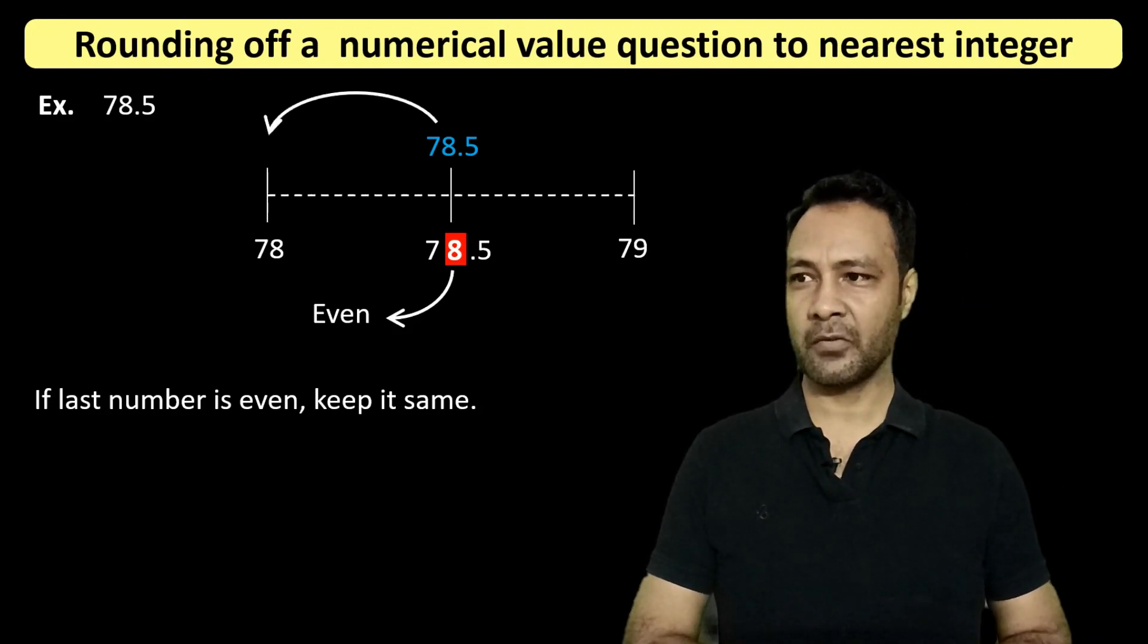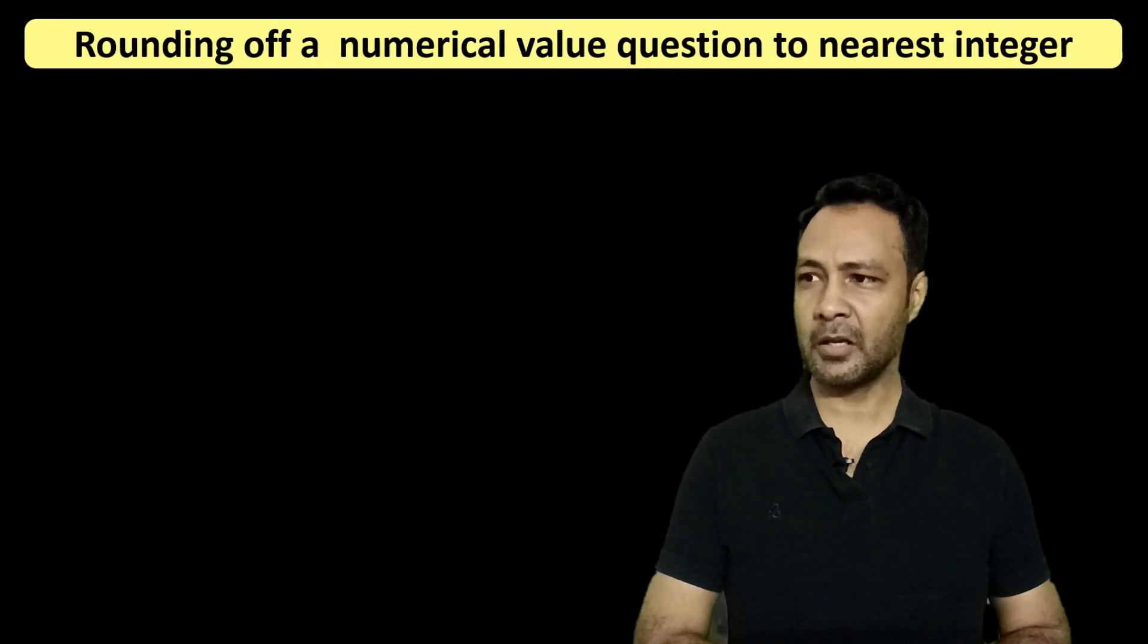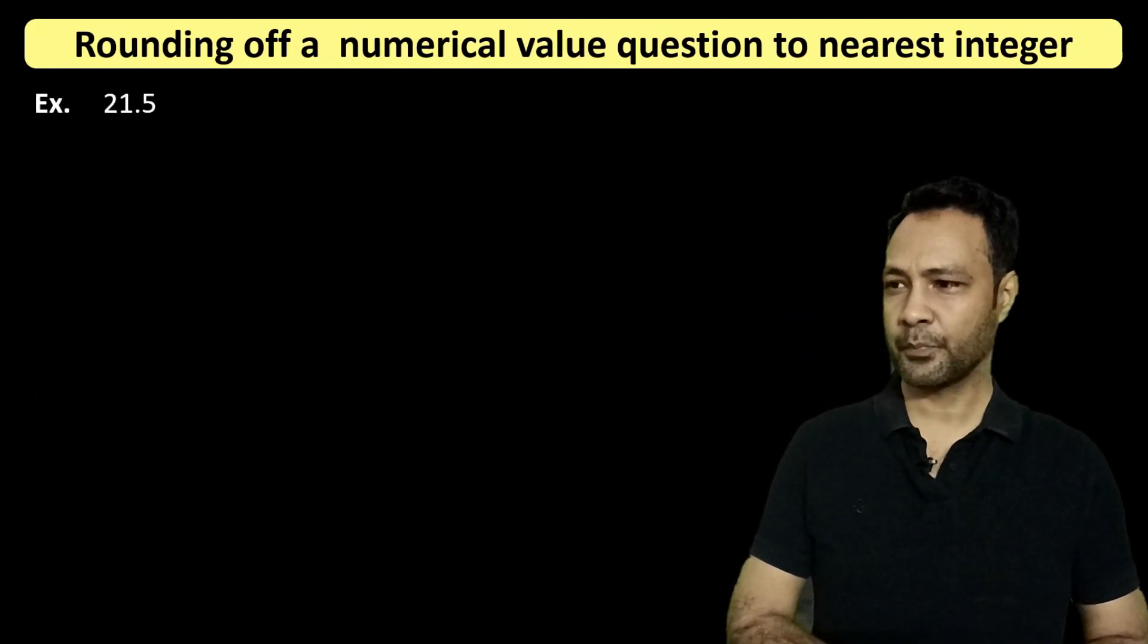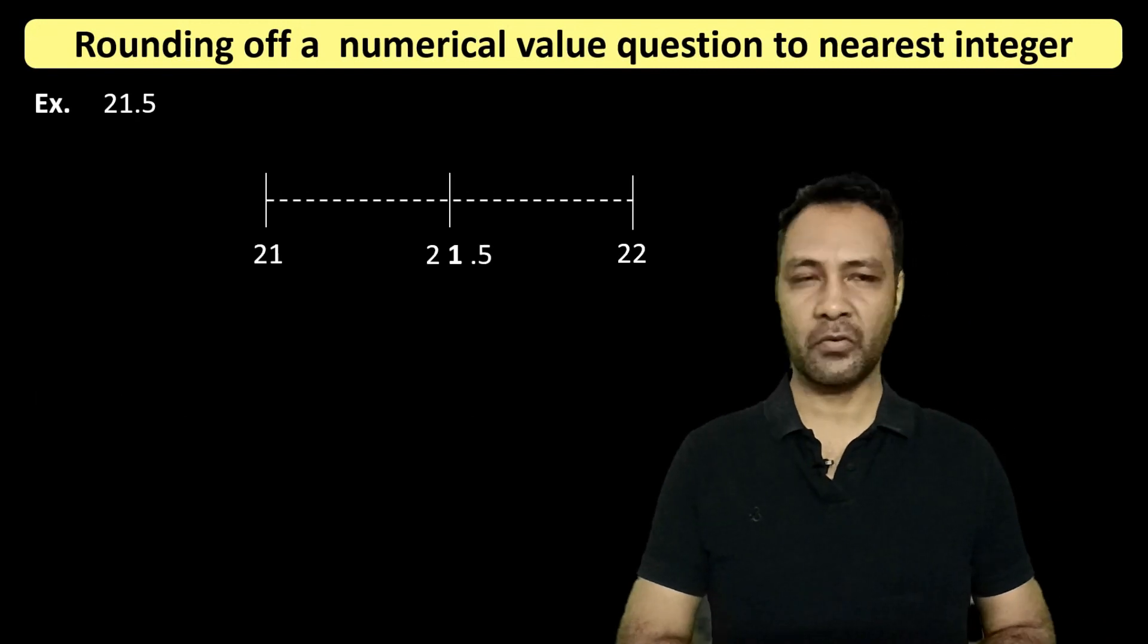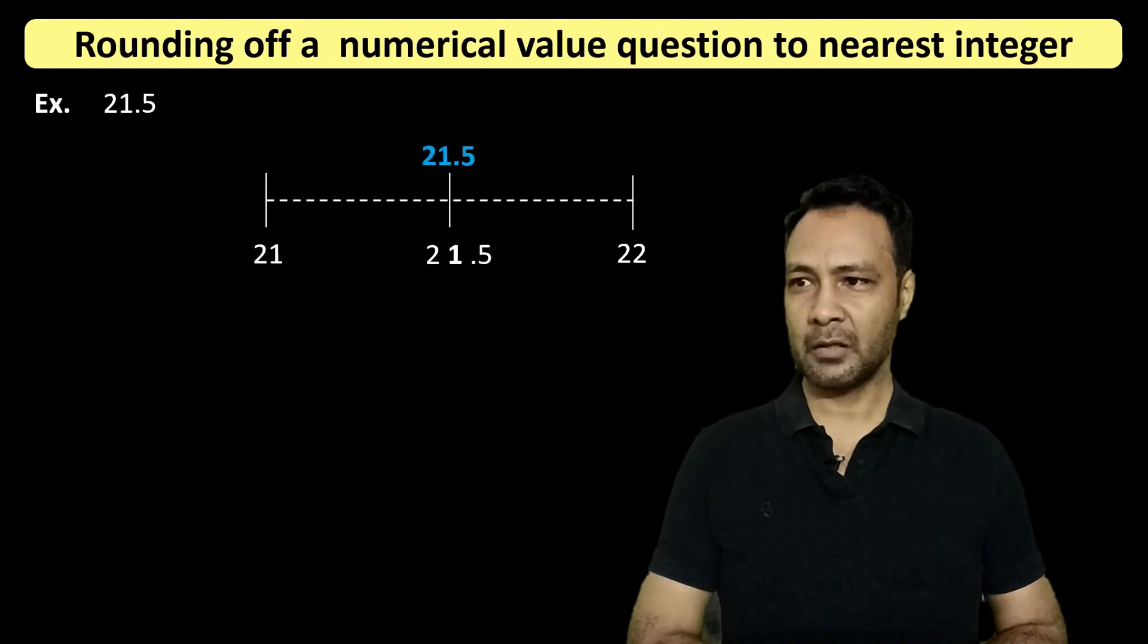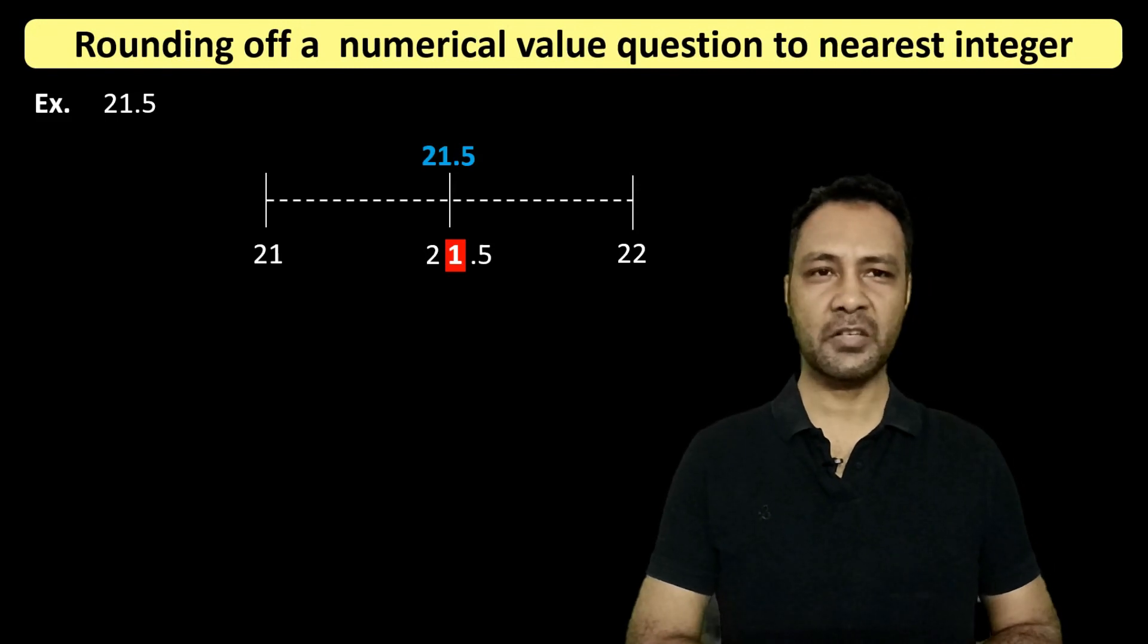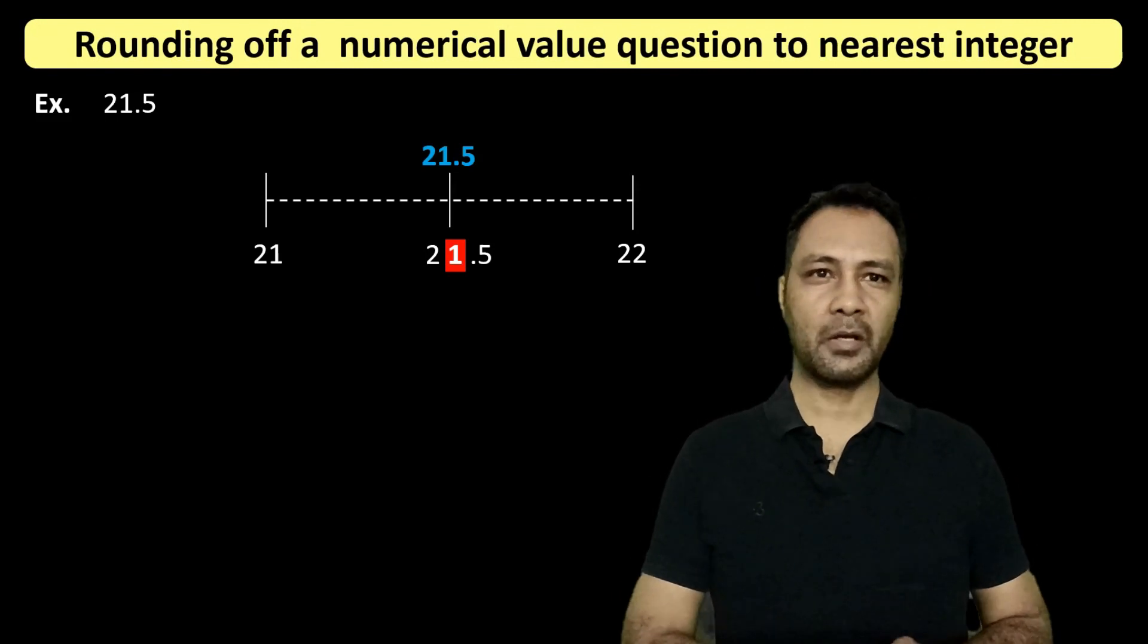Again, if we get the answer to some question as 21.5, which lies exactly between 21 and 22, and the last place to which we want to round off is an odd integer, then what we do is we just increase that last place by 1.